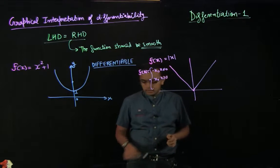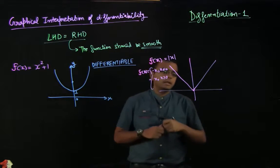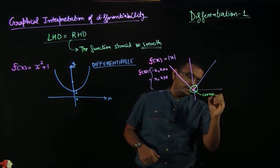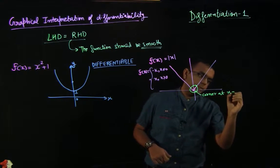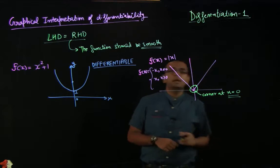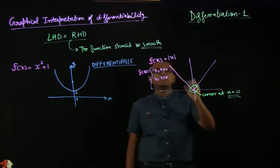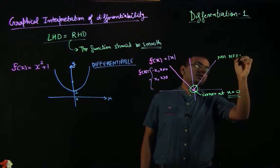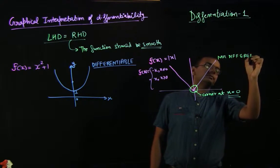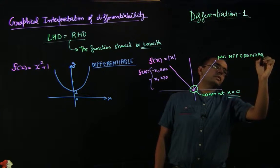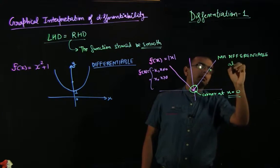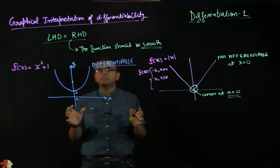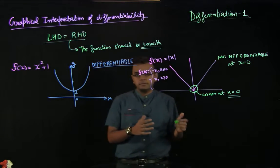In this case there is a clear corner at x equal to 0. Everywhere else it is smooth, and hence f(x) = |x| is not differentiable at x equal to 0. I hope you are able to understand the difference between a differentiable function and a non-differentiable function.